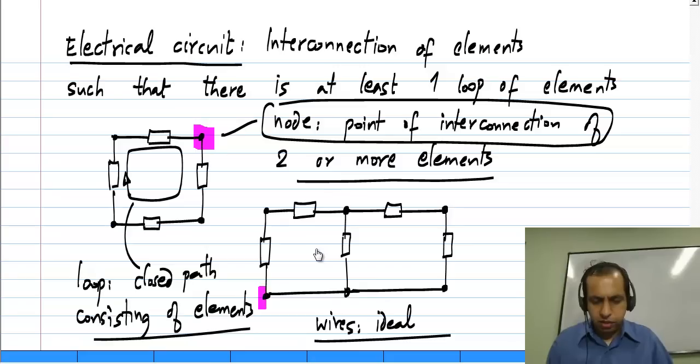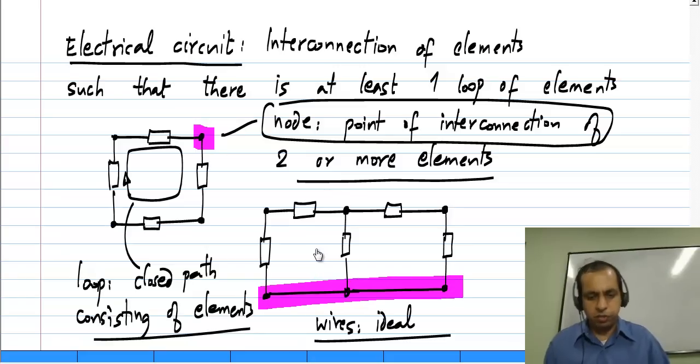Now, this whole thing here, which is a point of interconnection of this element, this element, and that element is a node. This is a node, that is a node, that is a node, and this whole thing is a single node.